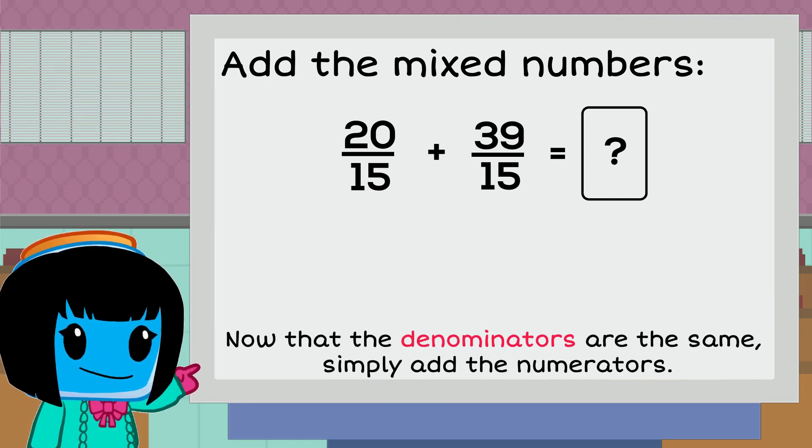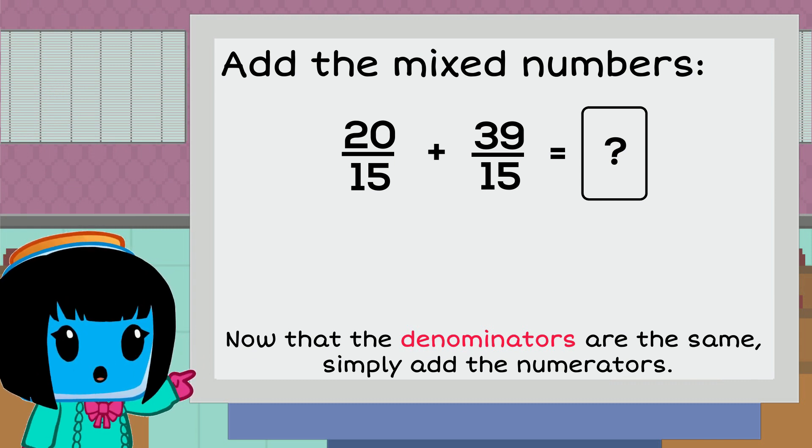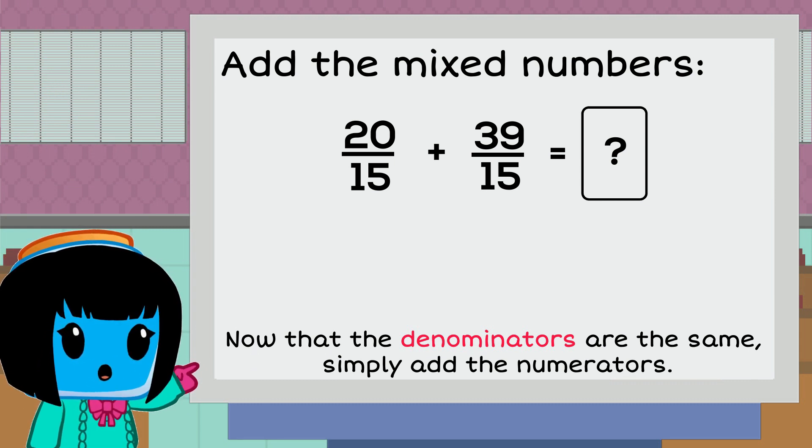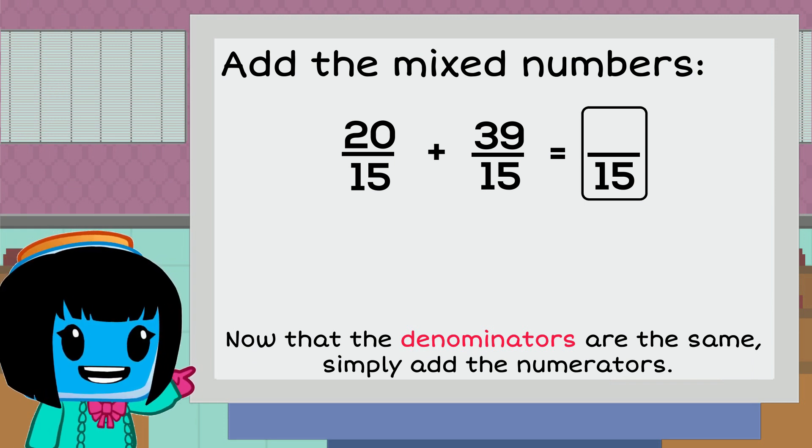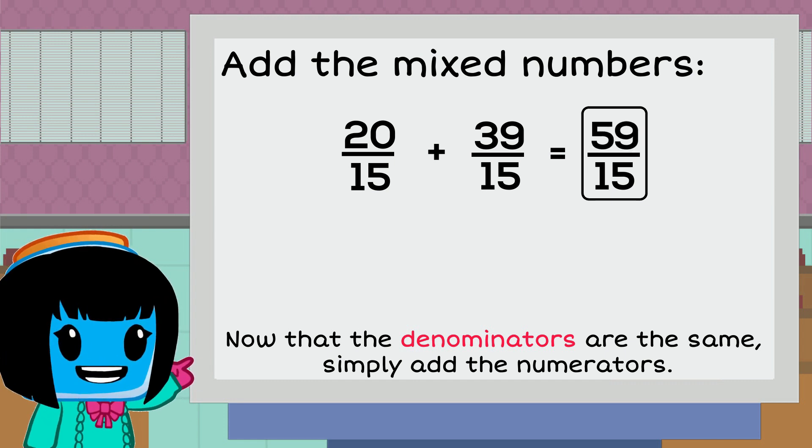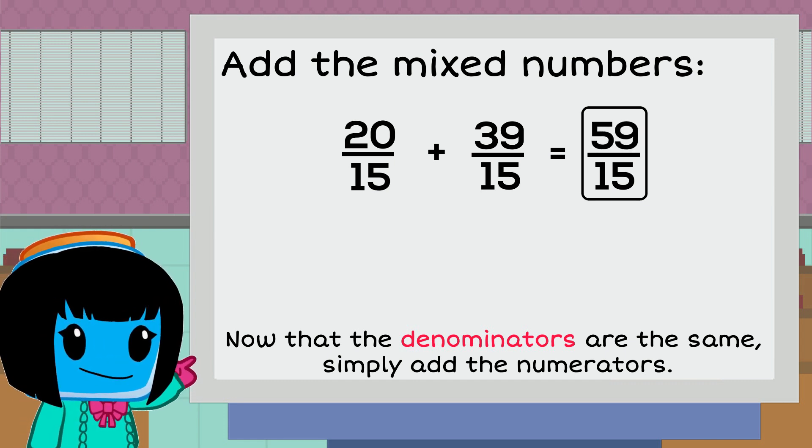Now, both of our improper fractions have like denominators. So we're going to leave the denominator as 15 and add our numerators. 39 plus 20. This equals 59. So our sum is 59 fifteenths.